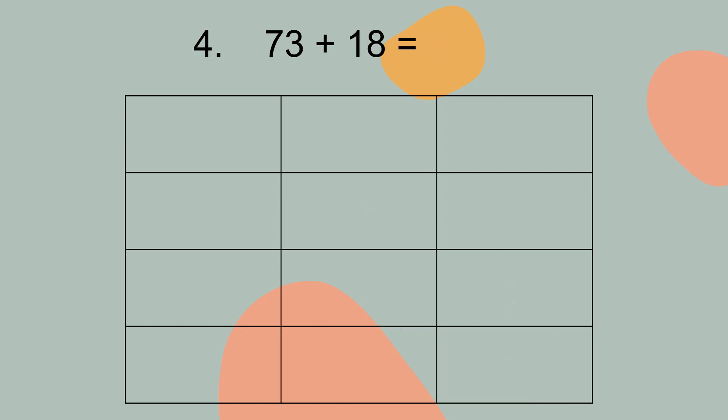Example number 4. 73 plus 18 equal to? Now 3 plus 8 equal to 11, 1 plus 7 equal to 8, 9. So your answer is 91.